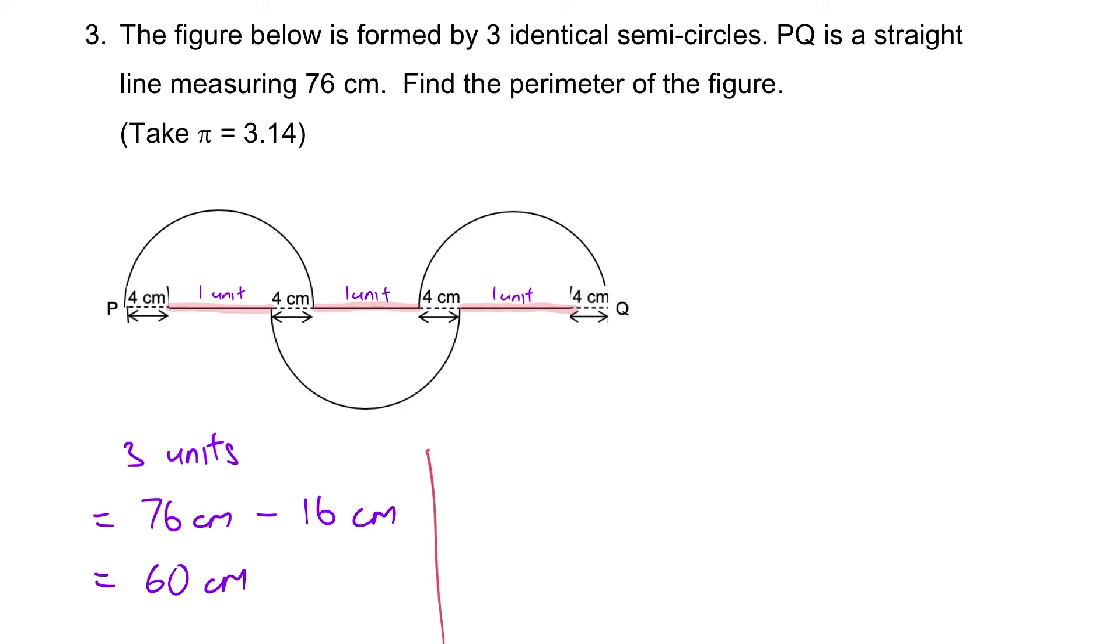Next step, what is one unit? One unit will be 60 divided by 3, which is 20.